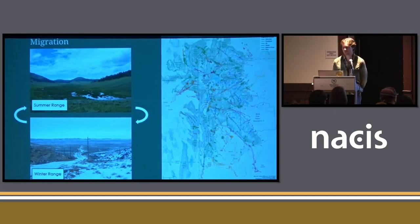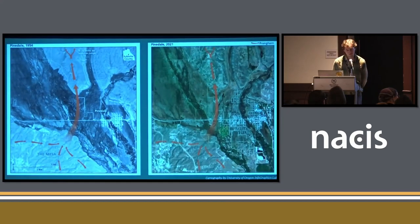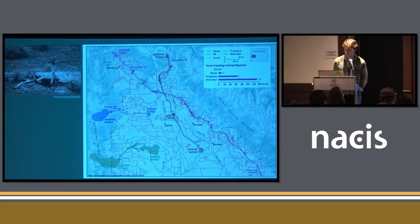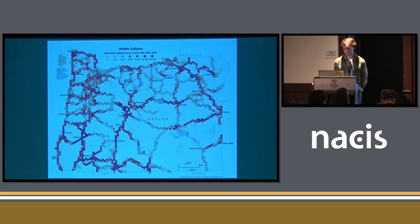This is important for conserving ungulate populations because it requires that they have large connected habitats to maintain healthy populations and in turn healthy ecosystems. Unfortunately, there are many threats to these migrations, including increased housing development in migration corridors, increased amounts of fences they have to cross, increased roadway traffic leading to collisions, as well as climate change, competition with other species, and disease.